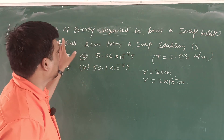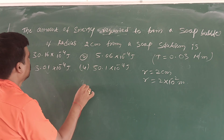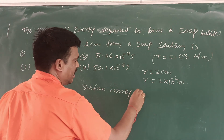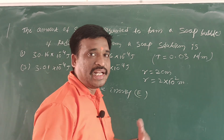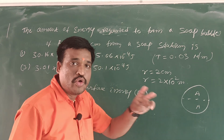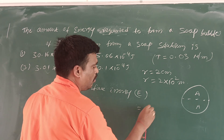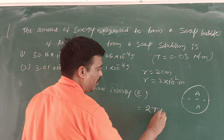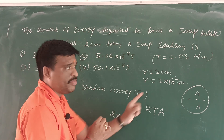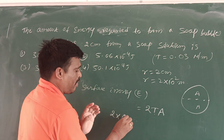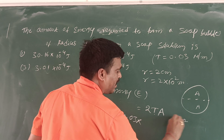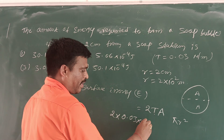Energy is required — surface energy. E is equal to... You know a soap bubble has two layers. It has two areas. So energy is equal to the formula: 2 into A into T. T means surface tension. 2 into T — T means already given surface tension, 0.03 — into A. A means area of the circle, pi R square.